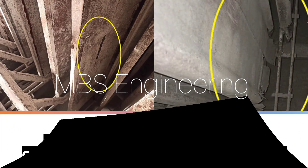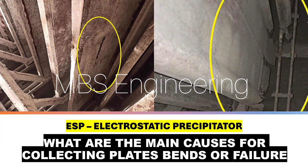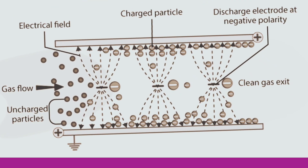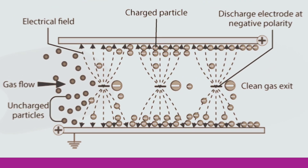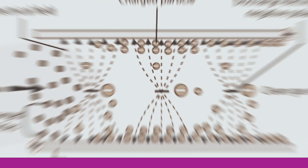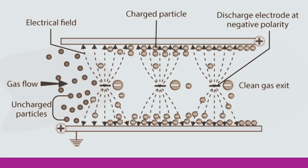Welcome to the MBS engineering channel. Today we are going to understand the main causes for collecting plates bends or failure. Before that, we understand the purpose of the ESP. An electrostatic precipitator, ESP, is a dust collecting device that removes particles from a gas stream by using electrical energy to charge particles.